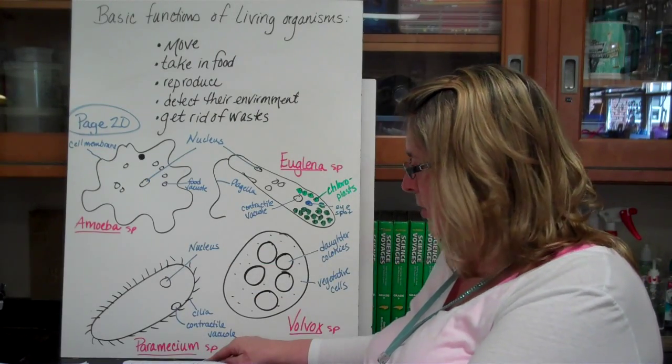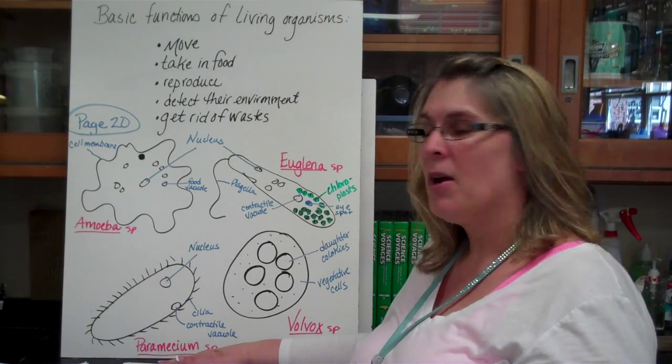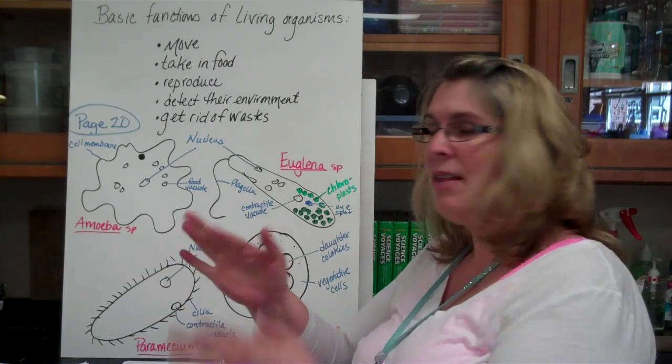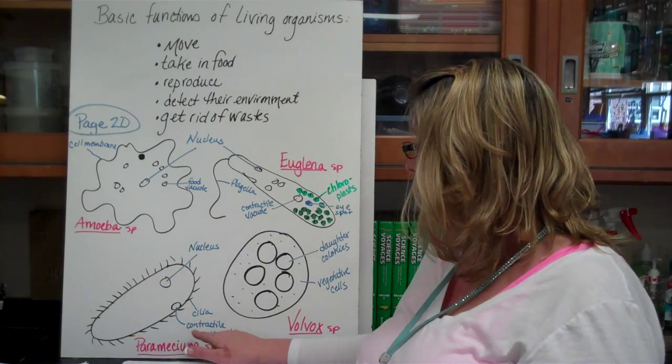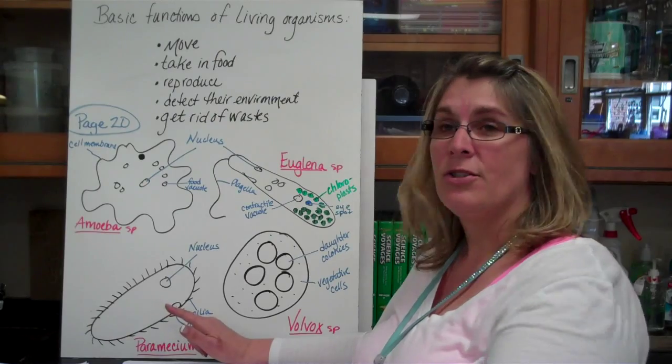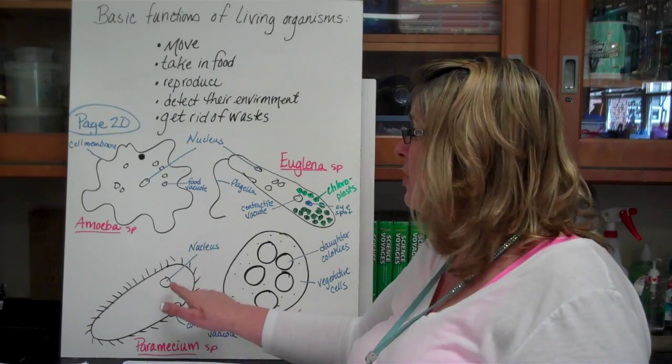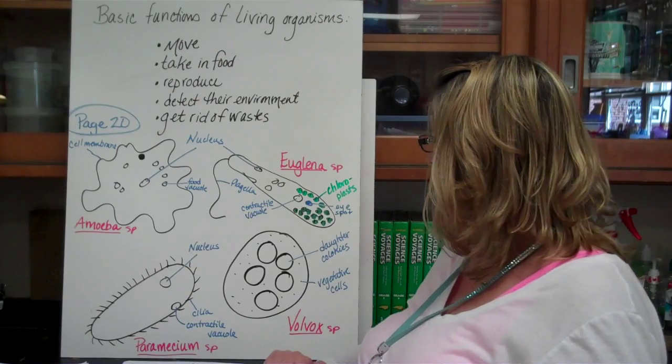The next one that I want you to look at is the paramecium. The paramecium has cilia, the little hairs that are all over it. It has a contractile vacuole where it actually stores some things and it has a nucleus. So that's the same here and here.